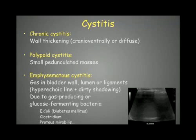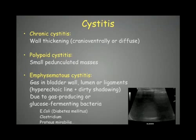We also have emphysematocystitis, which is a cystitis due to an infection caused by gas-producing or glucose-fermenting bacteria. There will be presence of gas in the bladder wall, in the lumen, or in the ligaments of the bladder. Normally we don't see any gas in the bladder unless it has been catheterized before the ultrasound examination. So if we see gas, it's suspicious of emphysematocystitis.